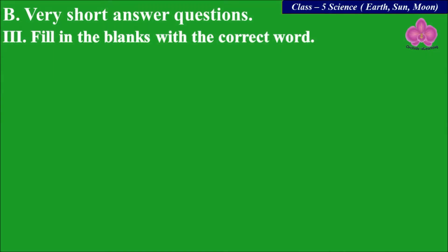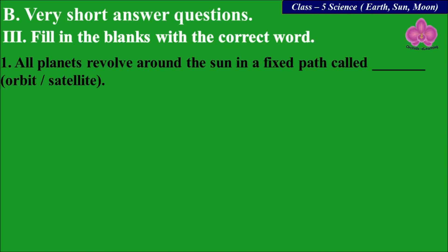Next: fill in the blanks with the correct word. You will get two options for each statement. First: all planets revolve around the Sun in a fixed path called dash — options are Orbit and Satellite. The answer is Orbit.